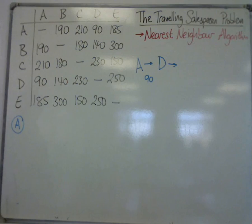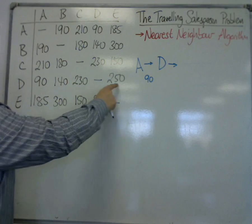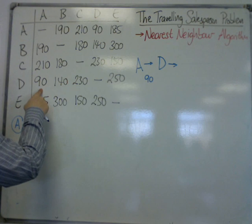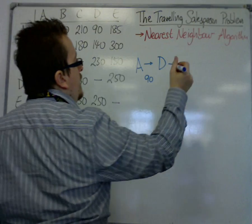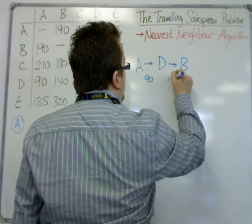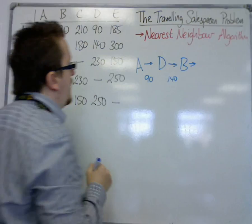Now we're looking at the shortest route out of D, but we don't want to go back to A because we've already been there. So the next shortest place will be B, so we're going to go to B next. So we've got the B.